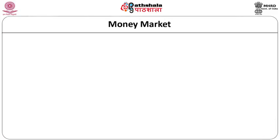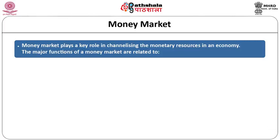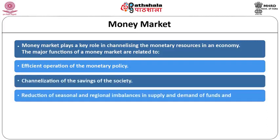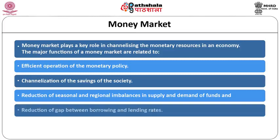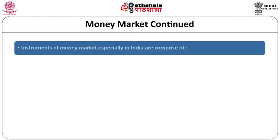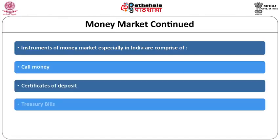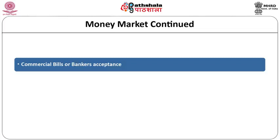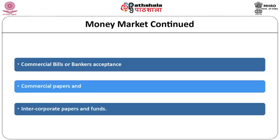Functions of money market: Money market plays a key role in channelizing monetary resources in an economy. The major functions are related to: smooth operation of monetary policy; channelization of savings of the society; reduction of seasonal and regional imbalances in supply and demand of funds; and reduction of the gap between borrowing and lending rates. Instruments of money market especially in India include call money, certificates of deposit, treasury bills, short-term security transactions (e.g. repos), commercial bills or bankers' acceptance, commercial papers, and inter-corporate papers and funds.